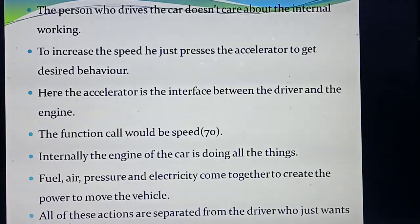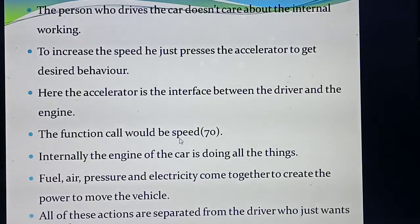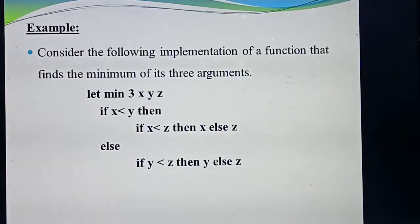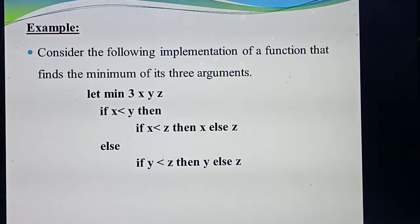So all these actions are handled by the driver. The interface controls only the function — for example, getSpeed(70). This is one simple example. One more example they have given: a sample program to find the minimum of three numbers. To find minimum of three numbers, how many variables do you require? Three variables. So the function definition is: let minOf(x, y, z). Function always starts with keyword 'let', followed by the function name. Here there is no 'or is' keyword, so this is a normal function. The function name is minOf, and arguments are x, y, and z.